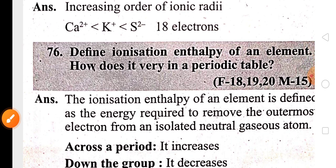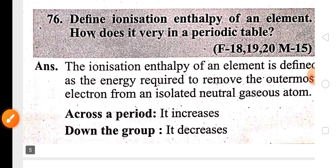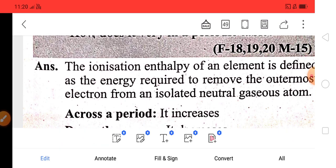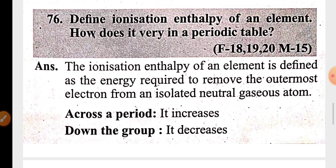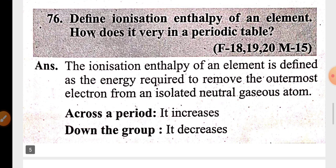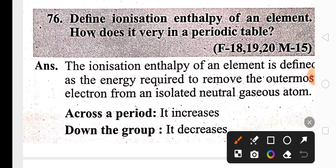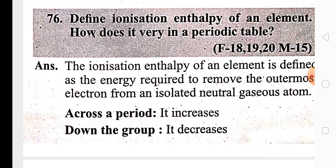Another important three-mark question is the definition of ionization enthalpy and its trend. Ionization enthalpy is the energy required to remove an electron from the outermost shell. Across the period it increases, and down the group it decreases.